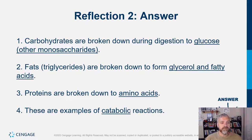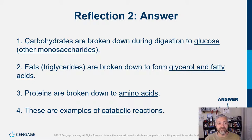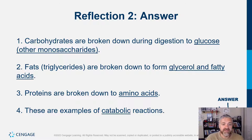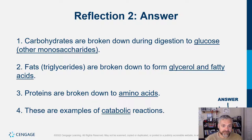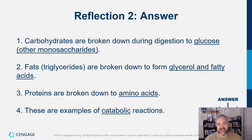Reflection number two — a review of things we've covered over the last several chapters. Carbohydrates are broken down during digestion to become glucose and the other monosaccharides — glucose, fructose, and galactose; fructose and galactose must then be converted to glucose by your liver. Fats (triglycerides) are broken down into glycerol and fatty acid tails, which can be burned for fuel. Proteins are broken down into individual amino acids, which can also be burned for fuel. These are all examples of catabolic reactions.